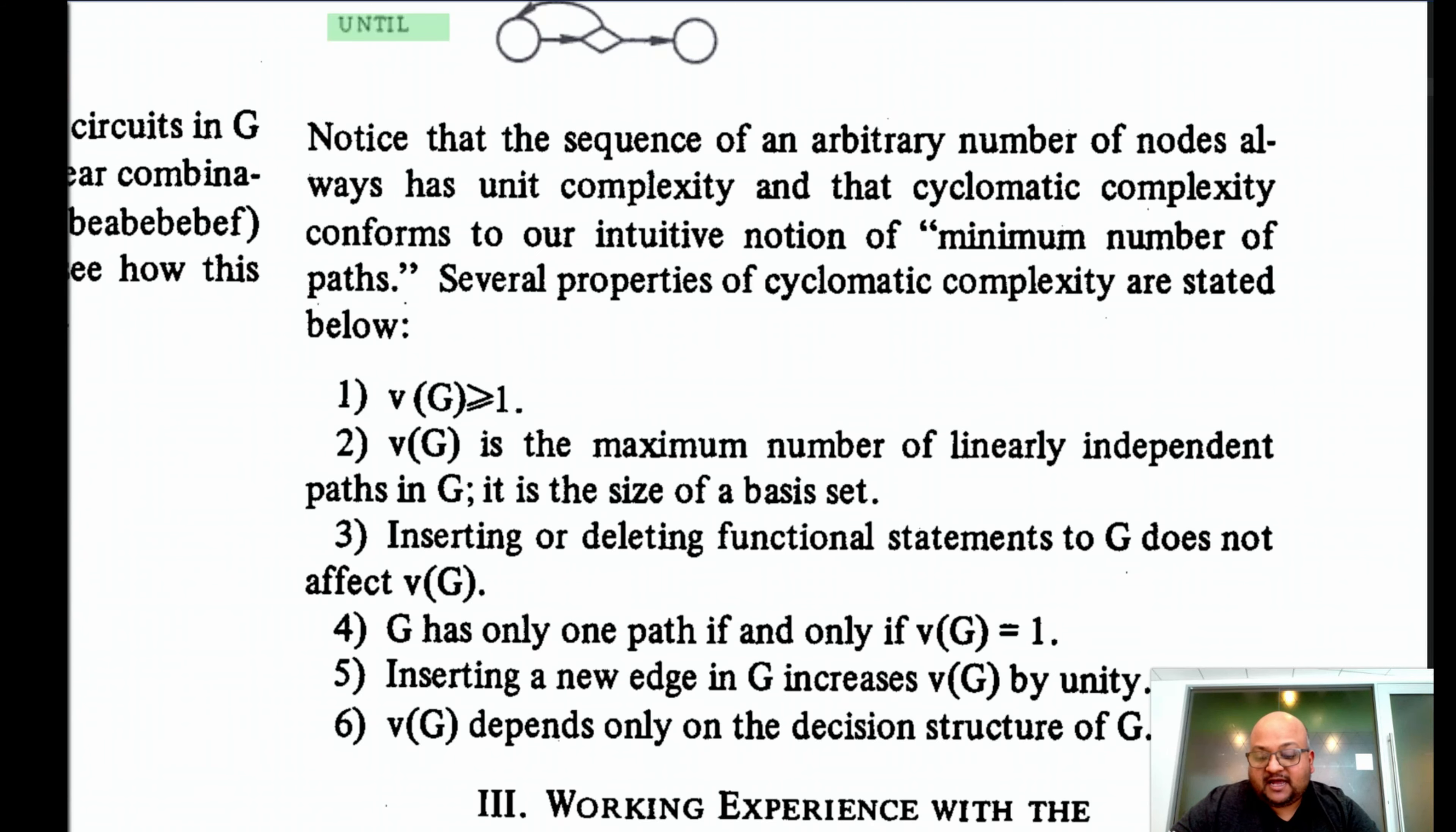So with this definition and the examples, we can see that cyclomatic complexity corresponds pretty nicely to our intuitive understanding of complexity being manifested as the number of paths through a program. And I think it is partly the simplicity and this ease of understanding that has contributed to the widespread use of this metric in software engineering practice.